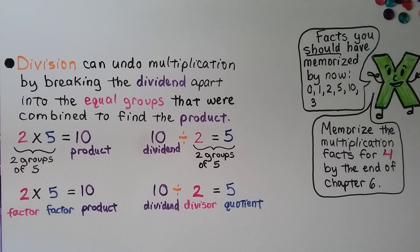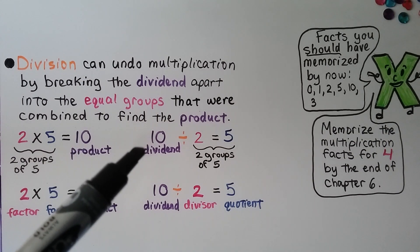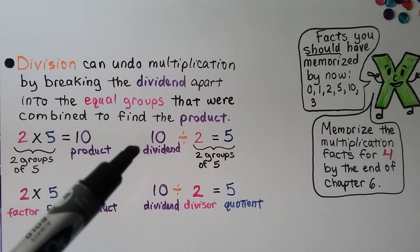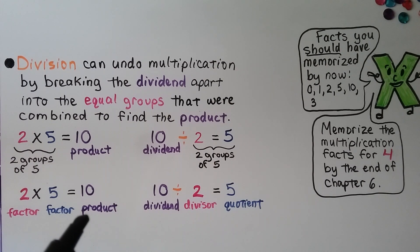Division can undo multiplication by breaking the dividend apart into equal groups that were combined to find the product. We have 2 groups of 5 as 2 times 5, and it's equal to the product 10. We break the dividend, this 10, into the equal groups that were combined to find the product — here we have them, 2 groups of 5. We have a factor and a factor and a product; we have a dividend, a divisor, and a quotient.